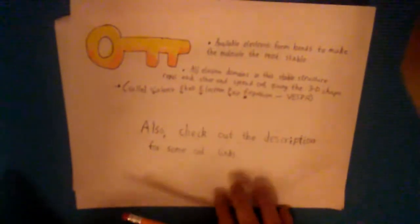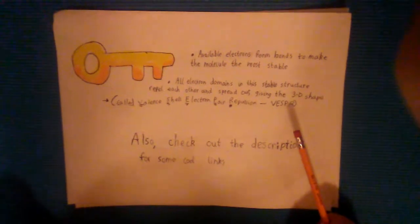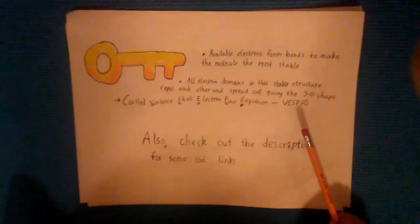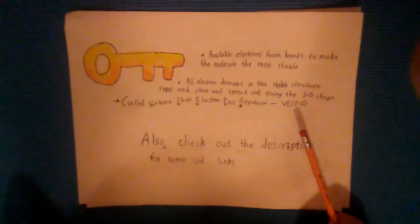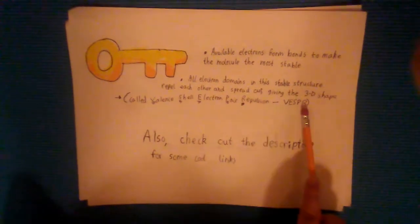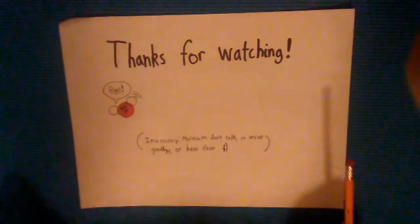To summarize the key points, the available electrons form bonds to make the molecule the most stable possible and all these electron domains in the most stable structure repel each other and spread out as much as they can. This is also called valence shell electron pair repulsion or VSEPR theory. Also check out the description for some cool links. Thank you for watching.